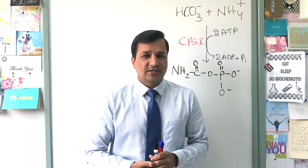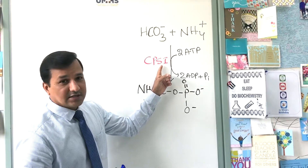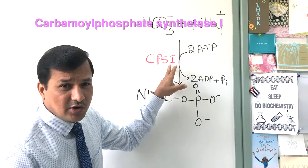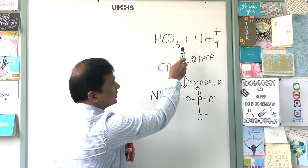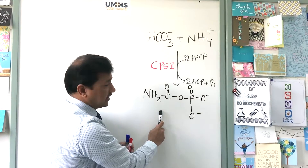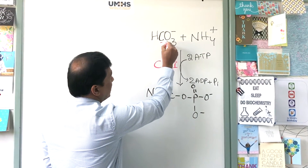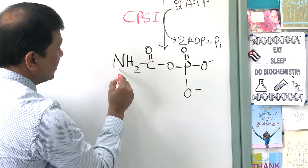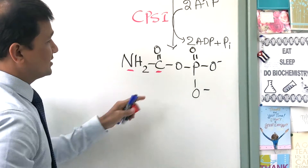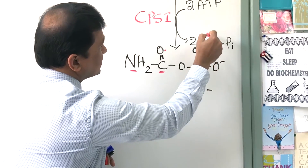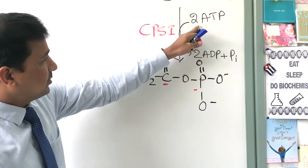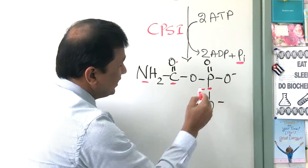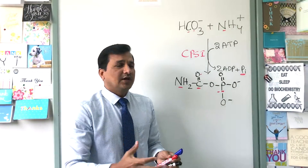The very first reaction in the urea cycle is catalyzed by an enzyme called CPS1 — carbamyl phosphate synthetase one. This enzyme condenses bicarbonate with ammonium ion to make carbamyl phosphate. As you can see here, the bicarbonate carries carbon and oxygen, and the ammonium ion carries nitrogen. Two ATPs are converted to two ADP plus one Pi, with the other Pi becoming attached to the carbamyl phosphate.